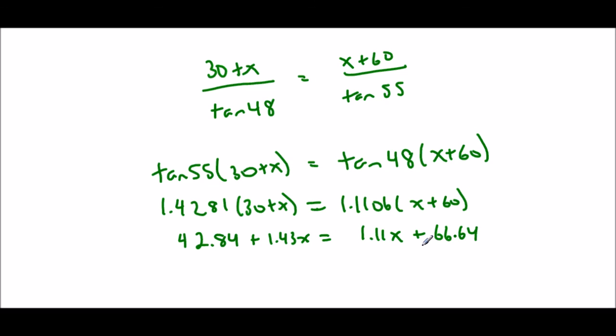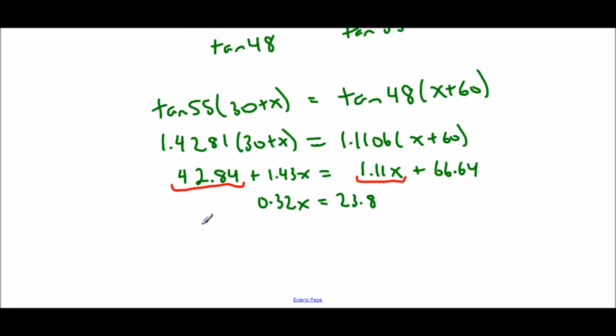So now I don't even have trig, I'm just literally solving for x in a grade 9 style equation. So I'm going to subtract 1.11x from both sides and I'm going to subtract 42.84 from both sides. So that gives me 0.32x equals 23.8. And then finally dividing by 0.32, I will have solved for x. So x equals 74.4.